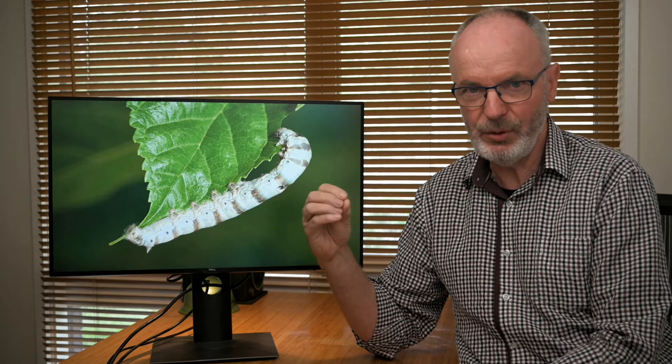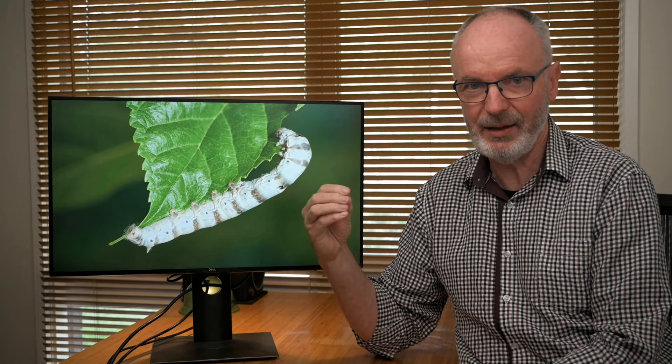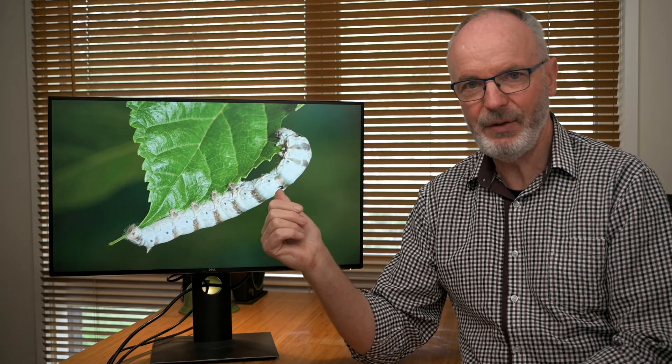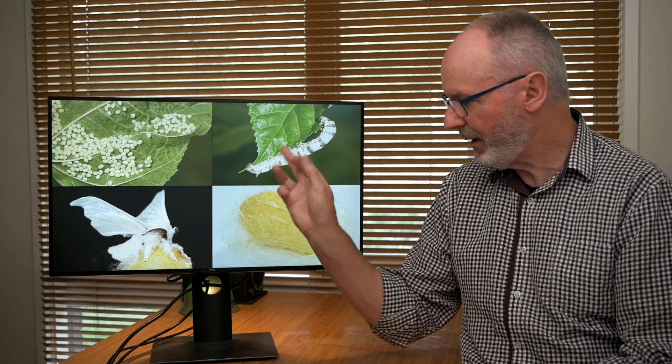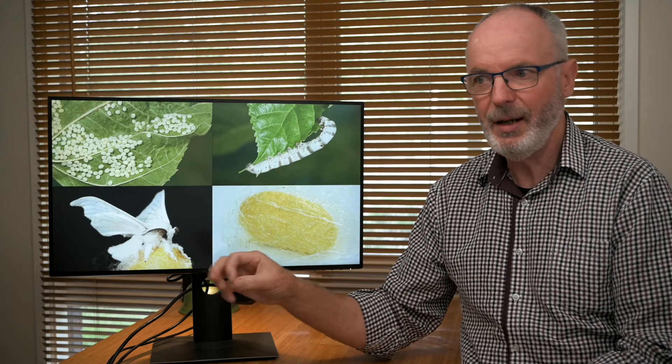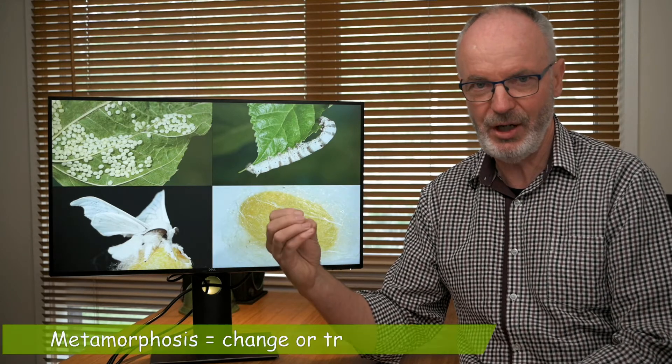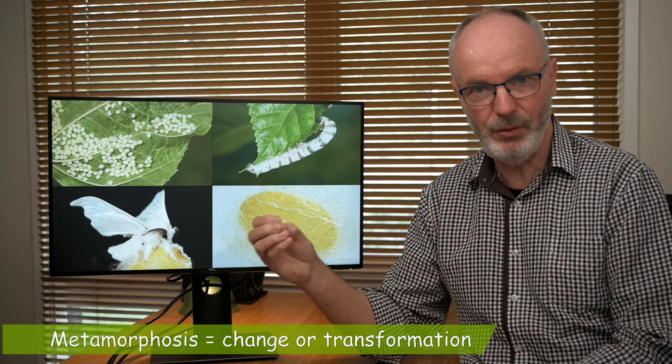Then the larva pupates, and we have pupae like this. In this case it's a moth, and lots of moths have cocoons around their pupae. From the pupa we eventually get the adult insects, which mate and away it goes again. If we look at the life cycle all in one image: egg, larva, pupa, adult. Metamorphosis actually means great change, and the great change they're talking about is the difference between the larva and the adult, and the change occurs at the pupal stage.